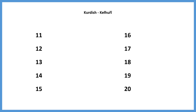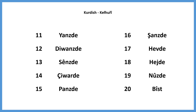So let's review these numbers. You may pause the video here and see how many you can remember. Welcome back. The numbers from 11 to 20 are: yans deh, duans deh, sen deh, chwaar deh, panz deh, shans deh, hef deh, hej deh, nuz deh, beast.